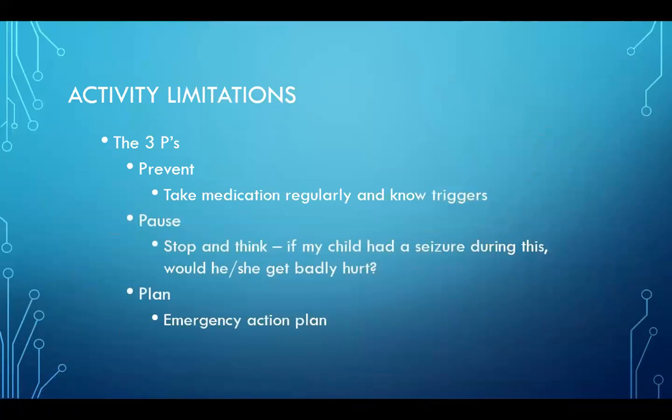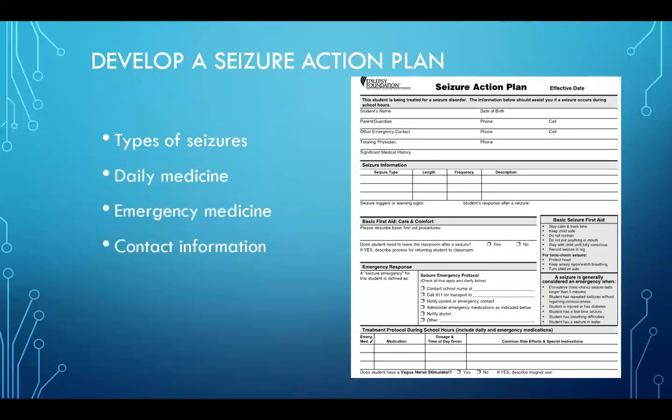Third: planning. You must have a seizure action plan in case something does happen — this puts you in control of the situation. Anyone who has had a seizure can and should have a seizure action plan. This plan should accompany the individual to school, work, or wherever they are with people who may not know their medical history. The plan should be easily available and include the types of seizures a person has, the medication they take daily, contact information, and an emergency medication plan. Work with your prescribing physician to make a seizure action plan, and find free examples at epilepsy.com and similar websites.